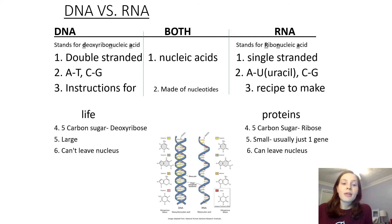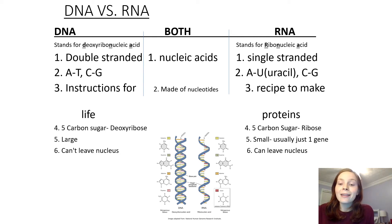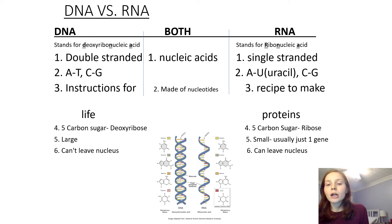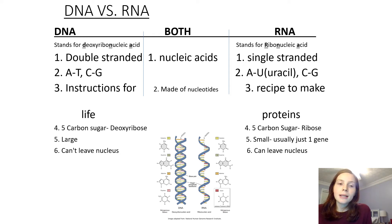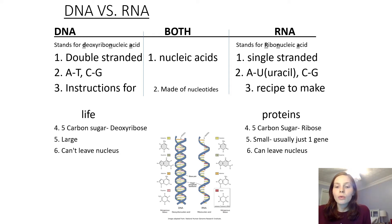One more thing: the 5-carbon sugar in DNA is deoxyribose, and in RNA the 5-carbon sugar is just ribose. So D for deoxyribose, R for ribose.